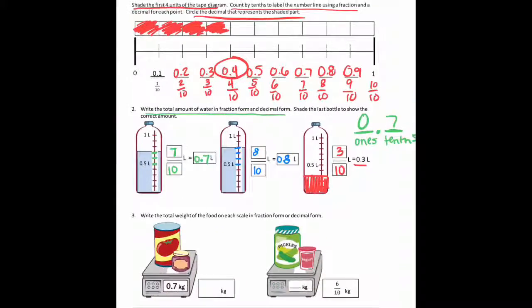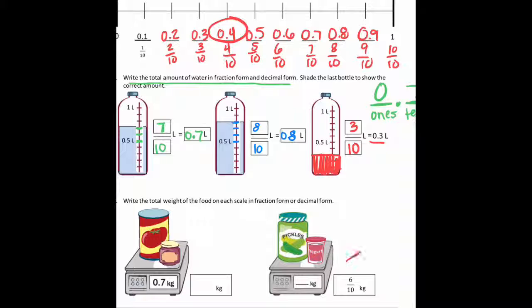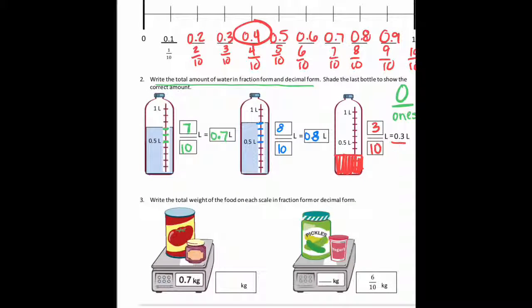Okay, on number 3, we'll zoom in a little bit so you can see it better. It says write the total weight of the food on each scale in fraction form or decimal form. The first one says 0.7 kilograms. So that's a 7 in the tenths place, so the way I would write it as a fraction is 7 tenths kilograms. And then the pickles say 6 tenths, so I would write that as 0.6 kilograms.